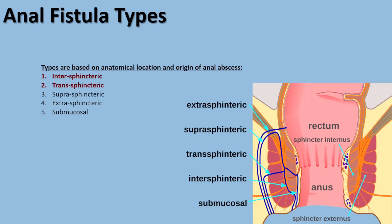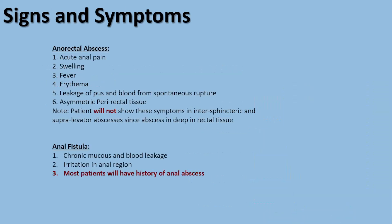For anal fistula, classification is also based on anatomical location and origin of the anal abscess. We have five types: inter-sphincteric (between the sphincteric muscles), trans-sphincteric (passing through the sphincteric muscle), submucosal (under the mucosal surface of the rectum), and extra-sphincteric (unrelated to the sphincteric muscle location). The two most common types of anal fistulas are inter-sphincteric and trans-sphincteric, designated in red in the image.